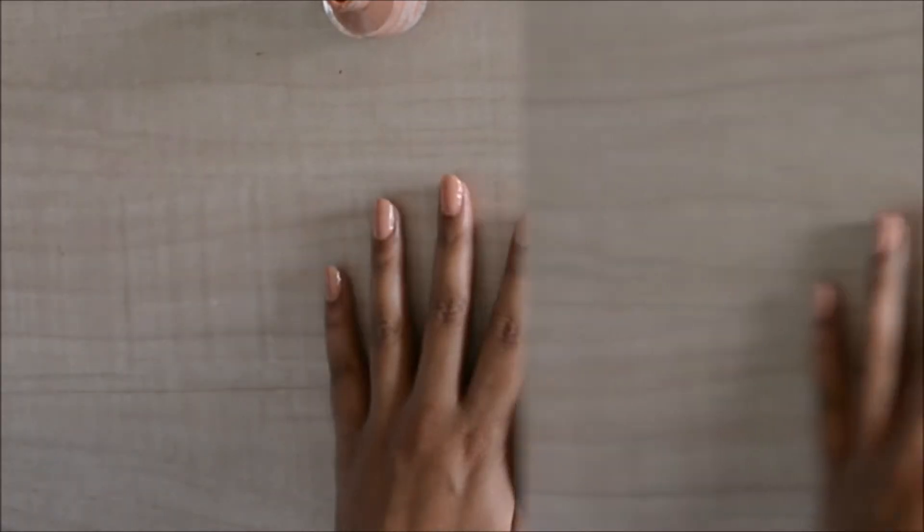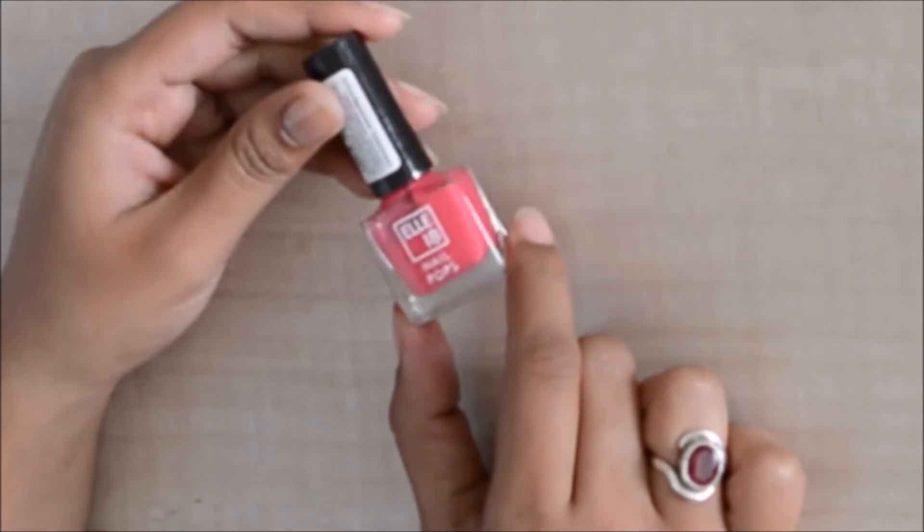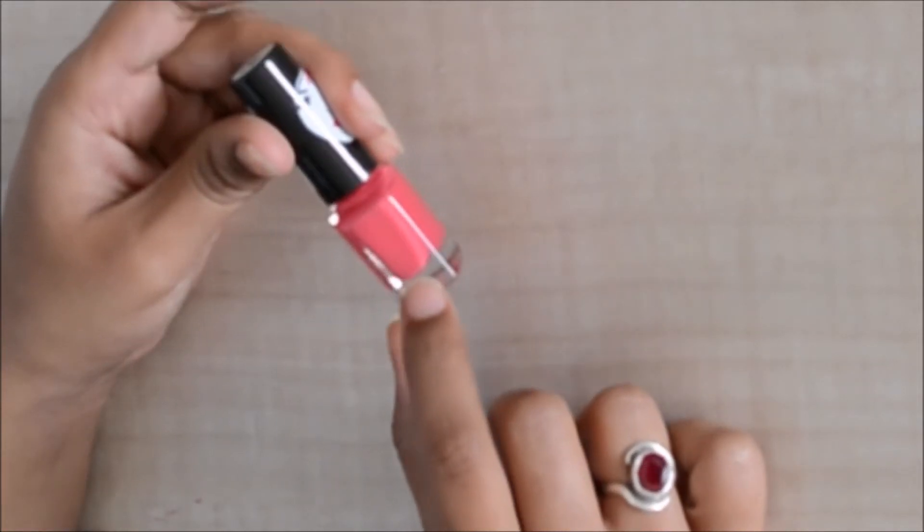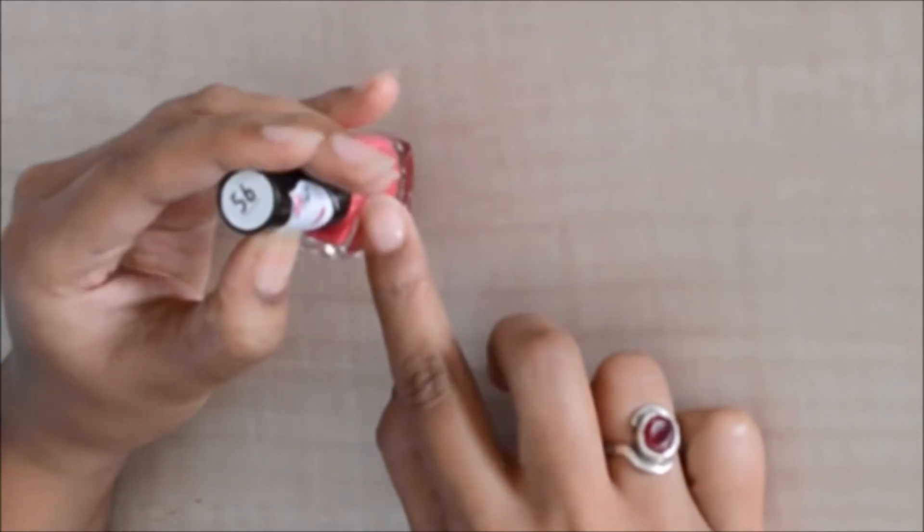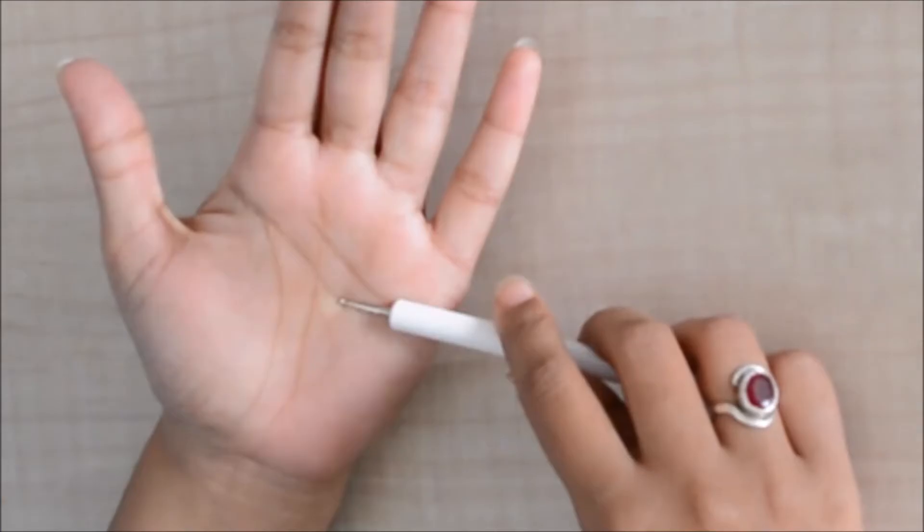Here are my nails after two coats of the nail polish and now it's time to begin with the flower nail art. For that I'm using this L18 Color Pop nail paint in the shade 56, and to make the flower I'm going to use this dotting tool.